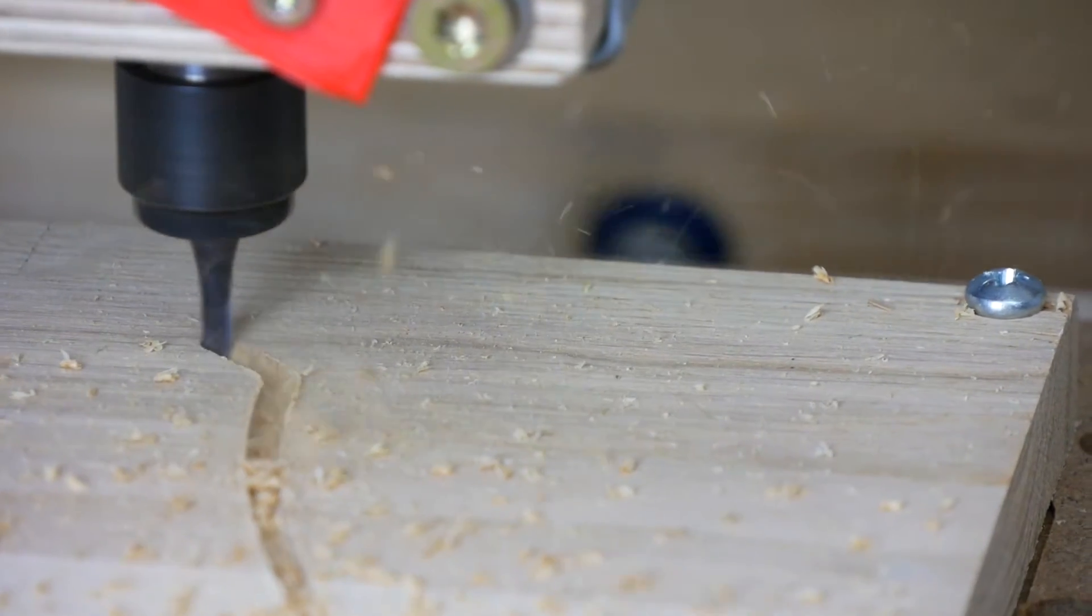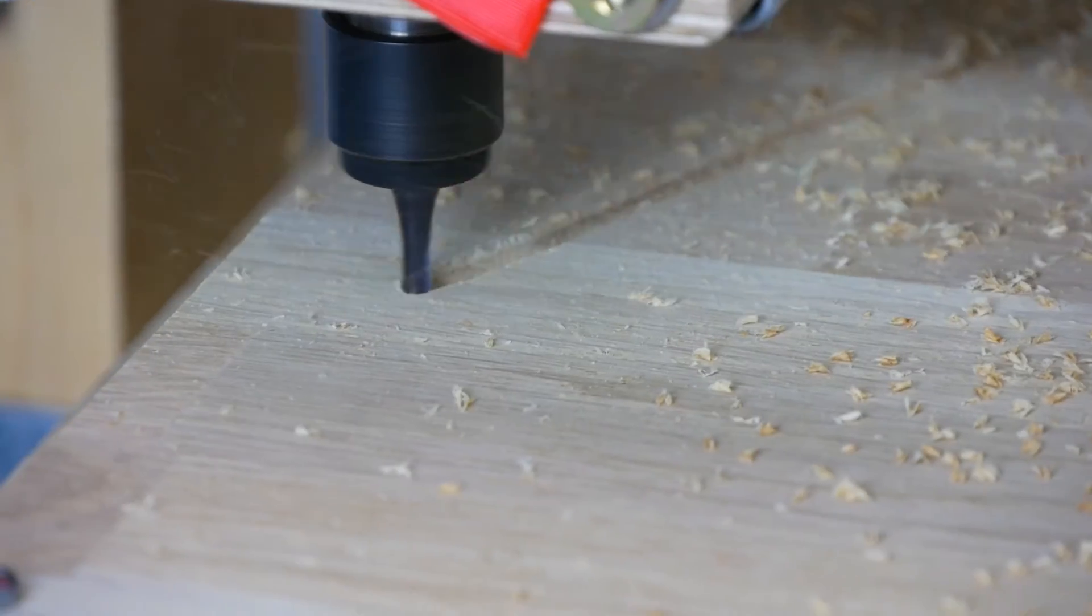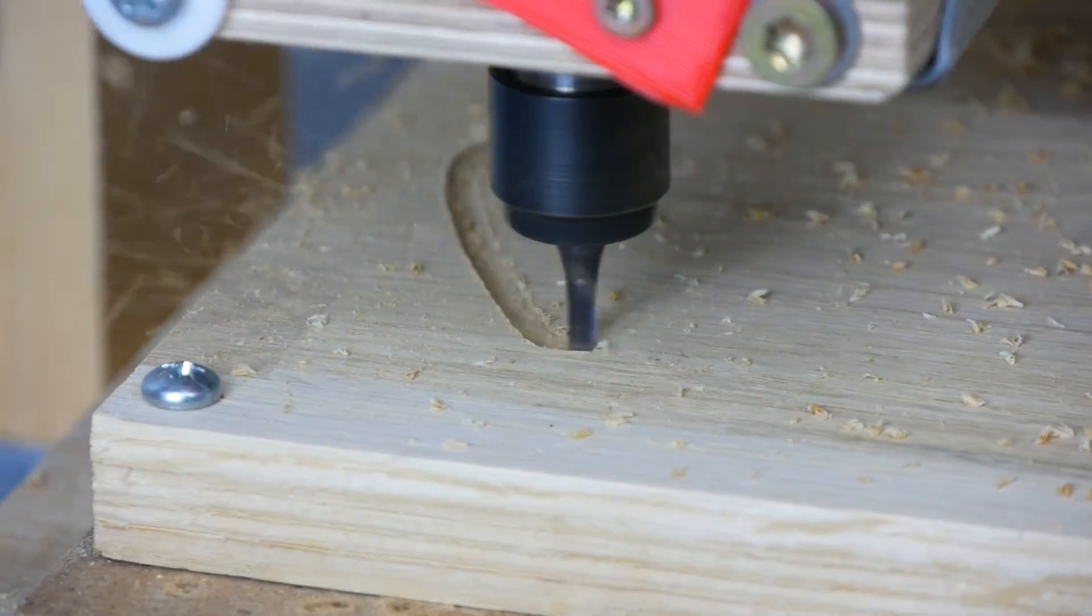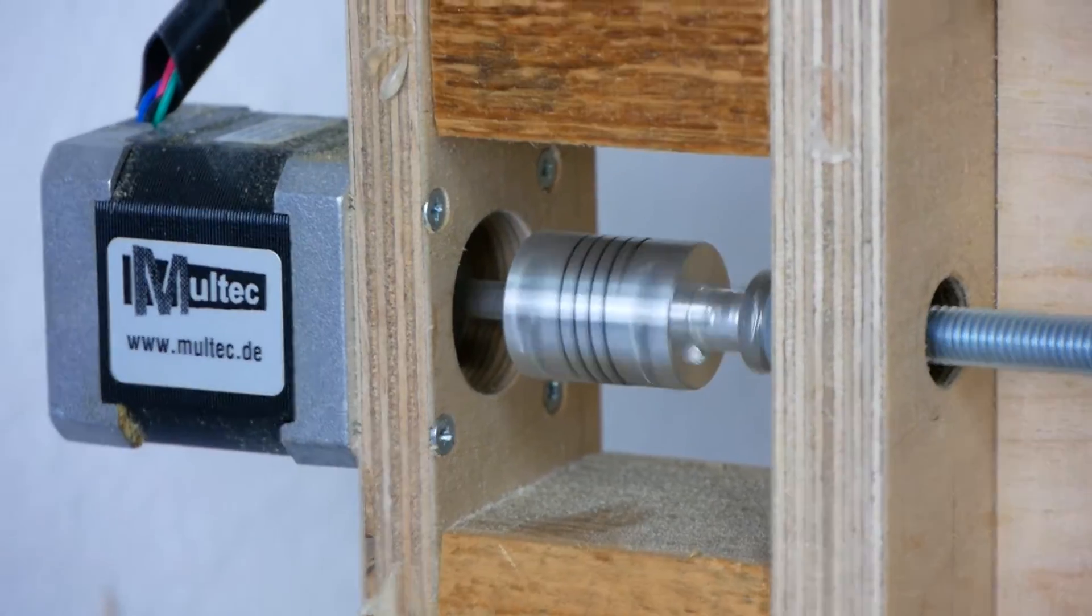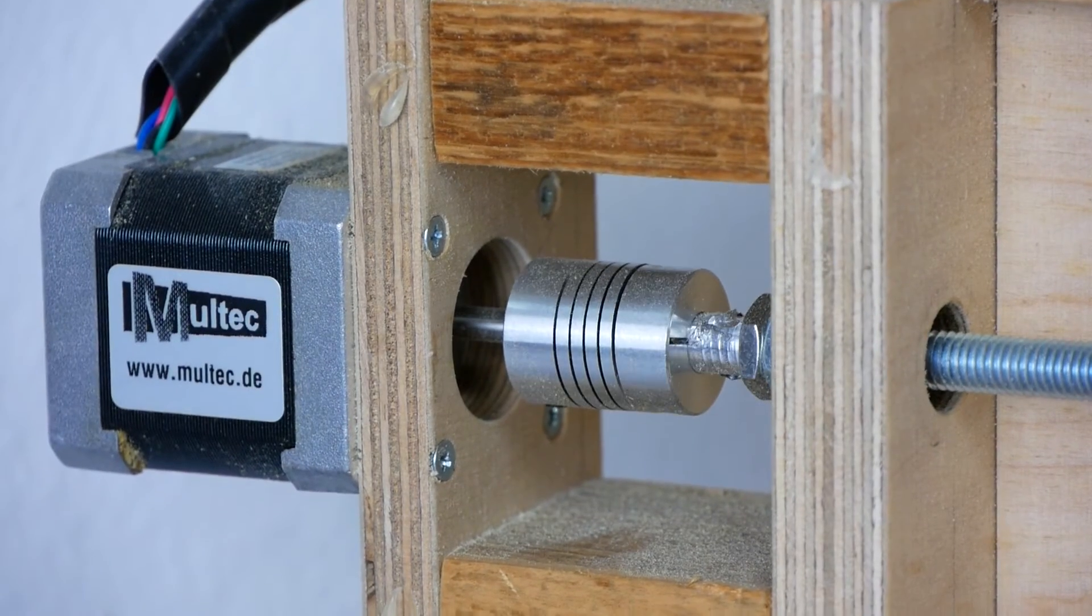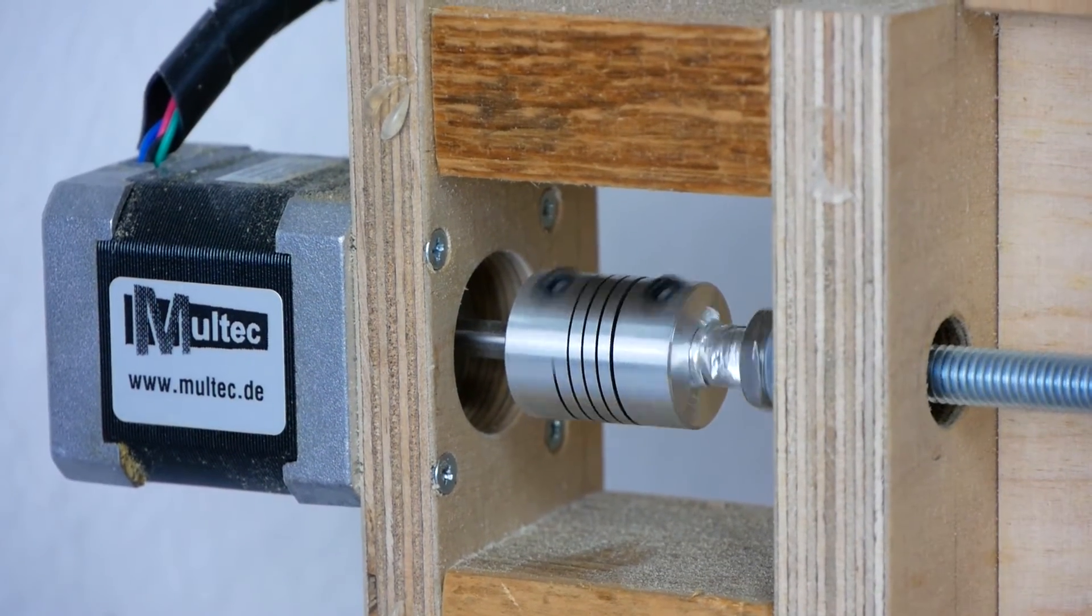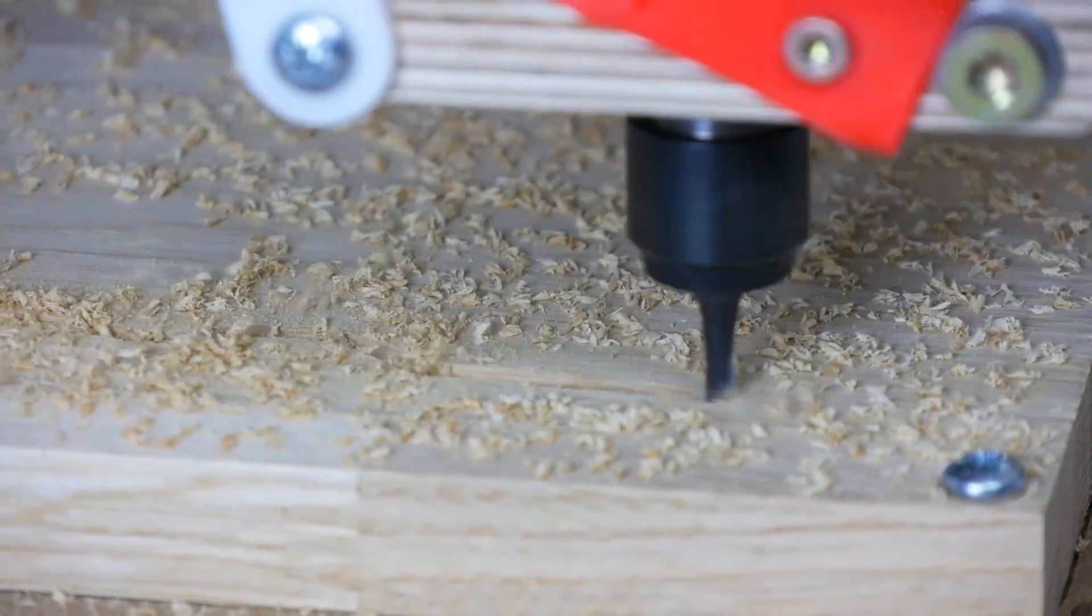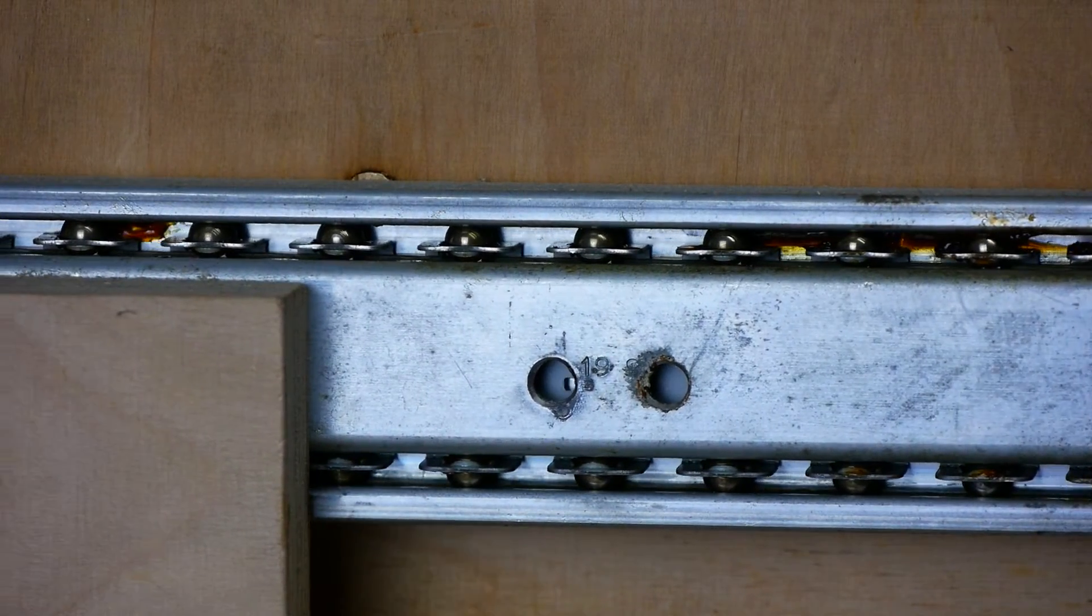I played around with small stepper motors out of floppy disk drives and then continued and purchased my first real stepper motors. What to do with them? Of course a CNC router! From the beginning on I only wanted to use parts which I can cheaply get from the local hardware store. Therefore the linear guides are for example simply heavy duty drawer slides.